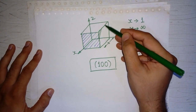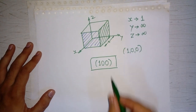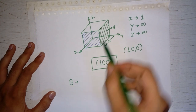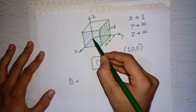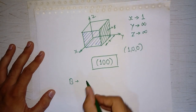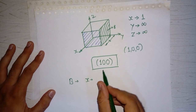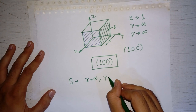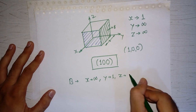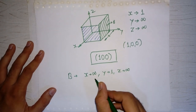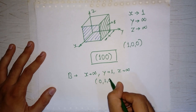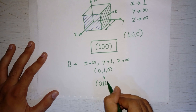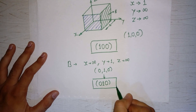Similarly, let's find the designation of plane B. I will check whether it is intersecting the origin — it is not, so no need to shift. The X-intercept is infinite because it is parallel to X. The intercept on Y is 1, and the intercept on Z is infinite. Taking the reciprocal gives 0, 1, and 0. Writing this in bracket without any separation gives the designation of this plane.